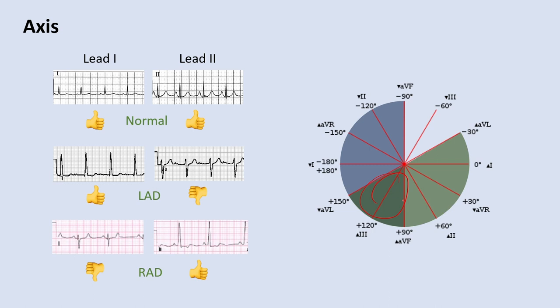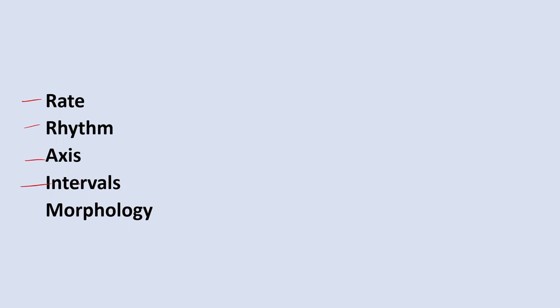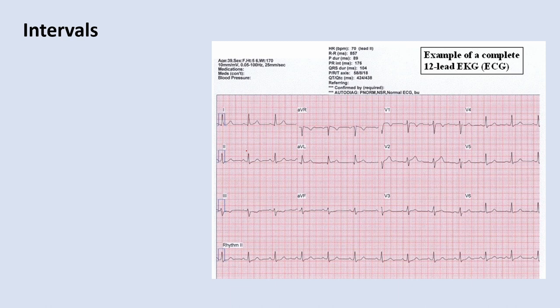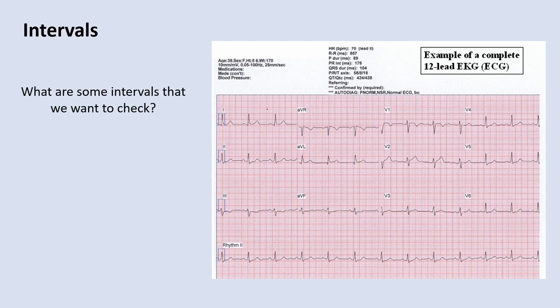Now you've calculated rate, rhythm, and axis. It's time to move on to intervals. The intervals cover three main things: the PR interval — from the P wave to the R wave of the QRS complex — then the QRS complex interval itself, and finally the QT interval. Those are the three main intervals you're going to be looking for.